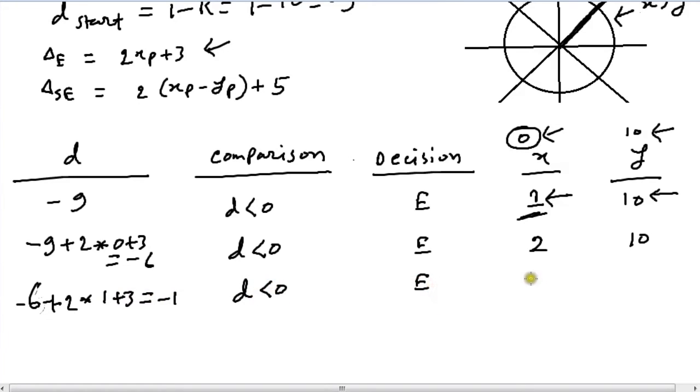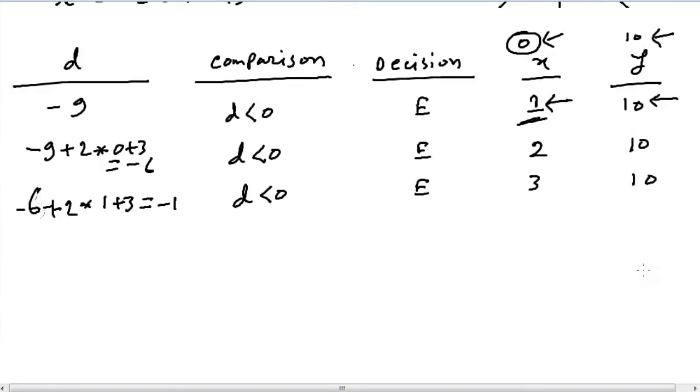and 2 plus 3, this gives us minus 1 and we still have d less than 0 which is E once again. So our x coordinate again goes up by 1, y coordinates remain the same. So once again we have our d value as minus 1 and add to that 2 into xp which is in this case 2 plus 3. That gives us positive 6, so d is greater than 0 in this case.